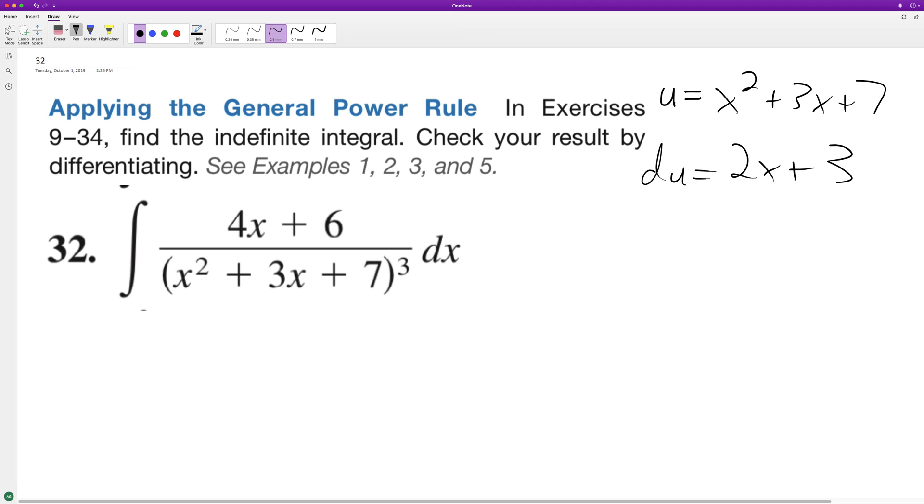And if you look up here, two x plus three is similar to four x plus six, we just need to multiply by two. So to get du equal to dx, we need to multiply du by two, so two du will equal dx.